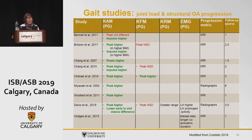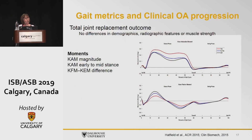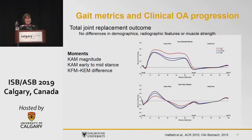As for EMG, less work has been done. We found a higher and more prolonged lateral hamstring activation. In Hodge's paper using MRI imaging, they demonstrated longer co-activation at the medial sites — a temporal rather than amplitude measure. Using total joint arthroplasty as an outcome — since decisions are based on structural damage and symptoms — we had a group of moderate knee OA individuals. After follow-up of about seven years, they were divided into groups that had a total joint arthroplasty and those that didn't, with no differences in demographics, radiographic features, muscle strength, or walking velocity.